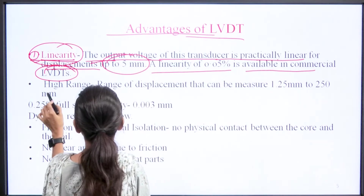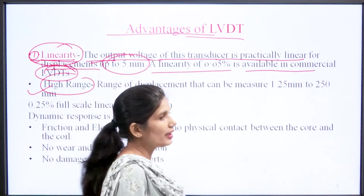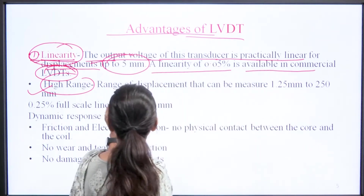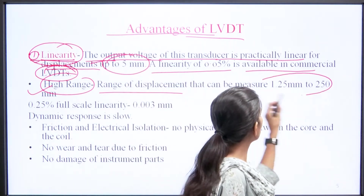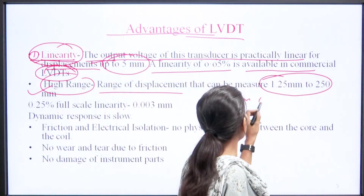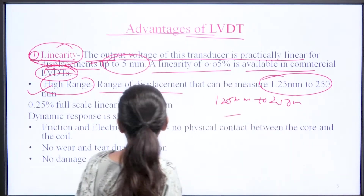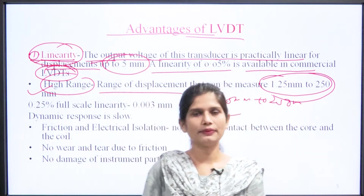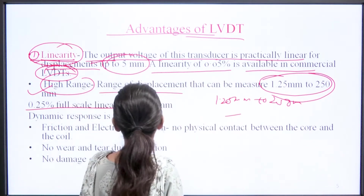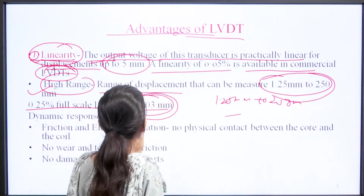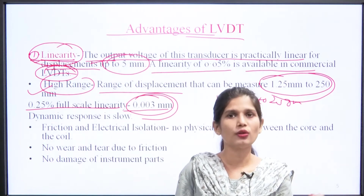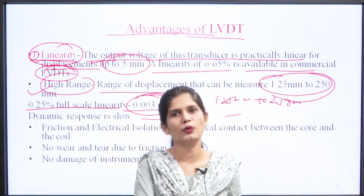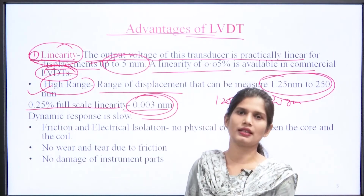The graph shows that up to 5 mm the variation is linear; after that it follows a non-linear pattern. A linearity of 0.05 percent is available in commercial LVDTs. The next advantage is high range — with the help of LVDTs we are able to measure displacement ranging from 1.25 mm to 250 mm, with 0.25 percent full-scale linearity.